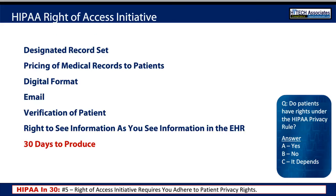The HIPAA Right of Access Initiative is being strictly enforced by the Office for Civil Rights. It includes making sure that the patient has access to their entire designated record set, that reduced pricing is in place for patients to get their medical records, and that patients can get their records in whatever digital format you are capable of producing — and that includes email. We must provide verification of the patient, and they have a right to see the information as you see it in the EHR.